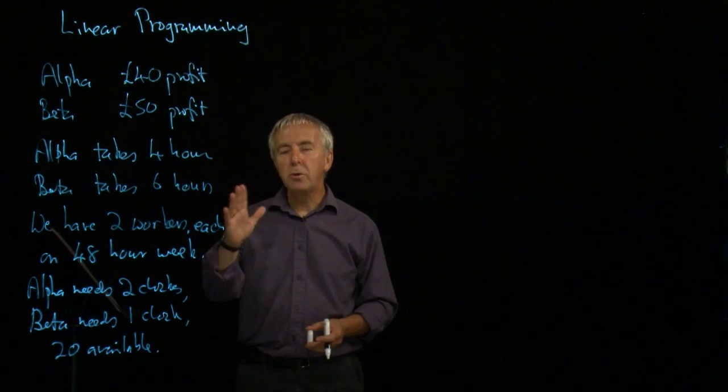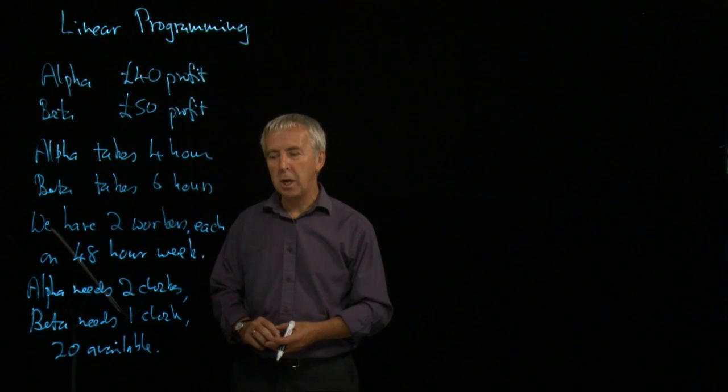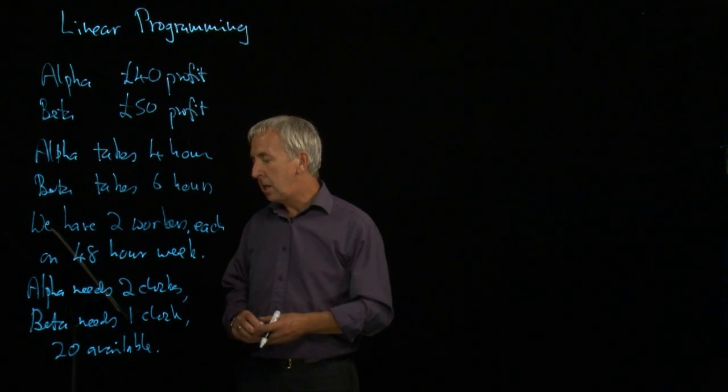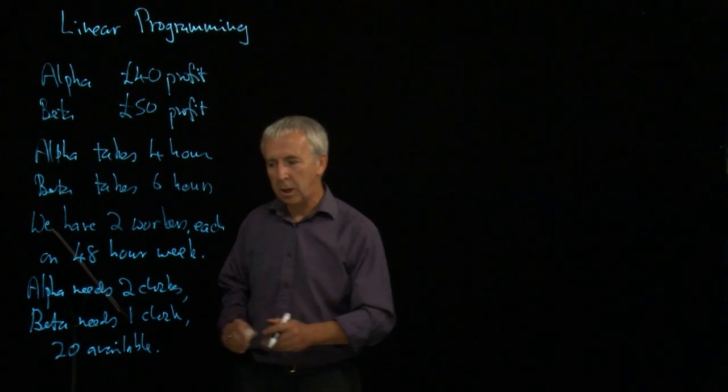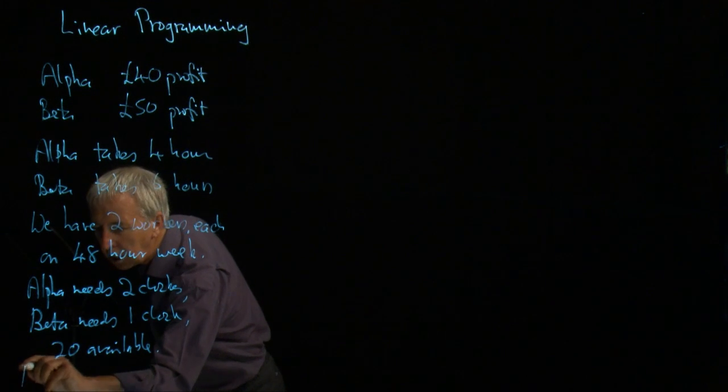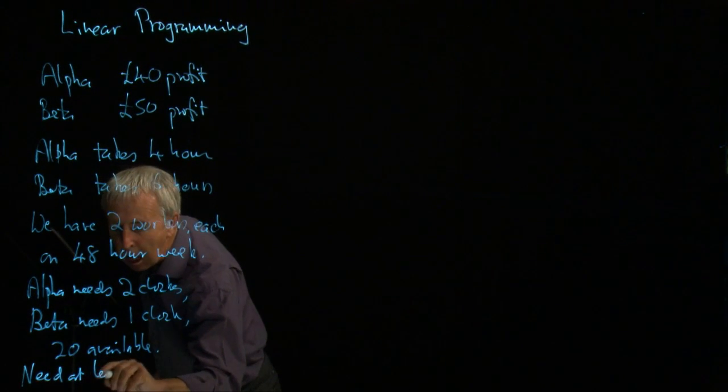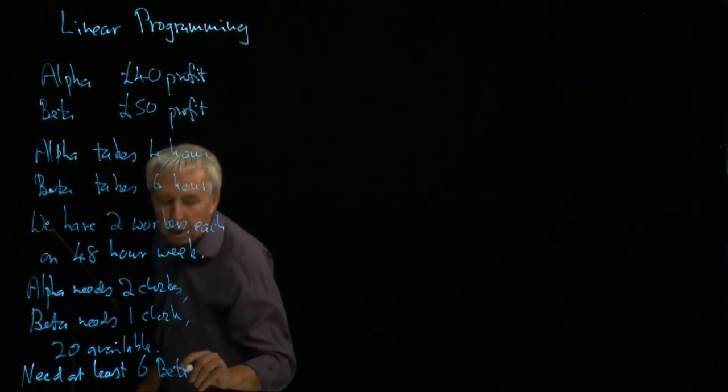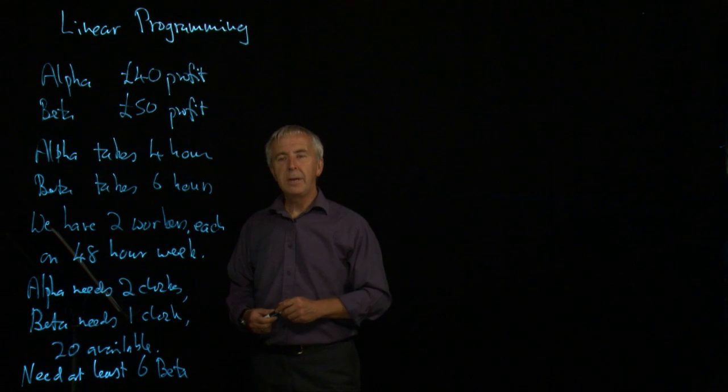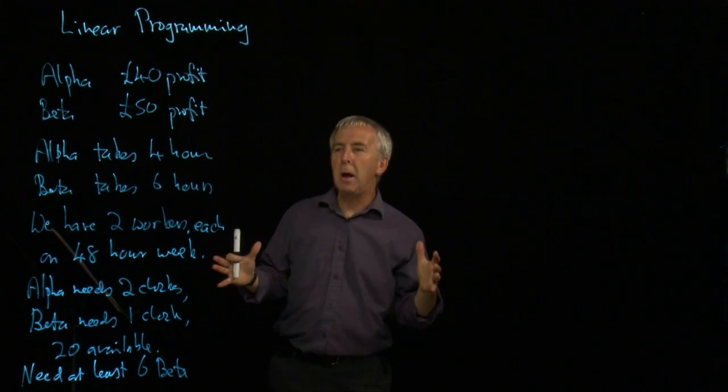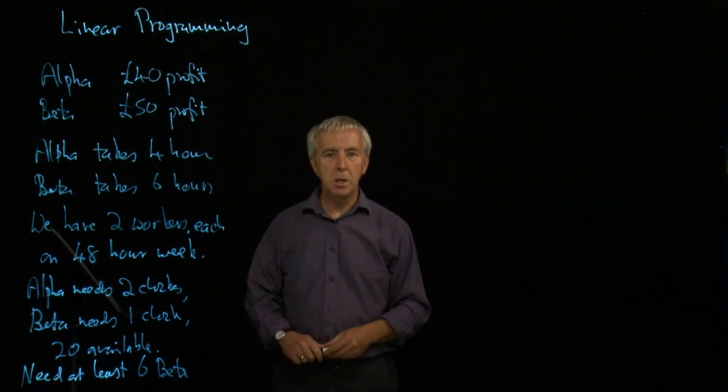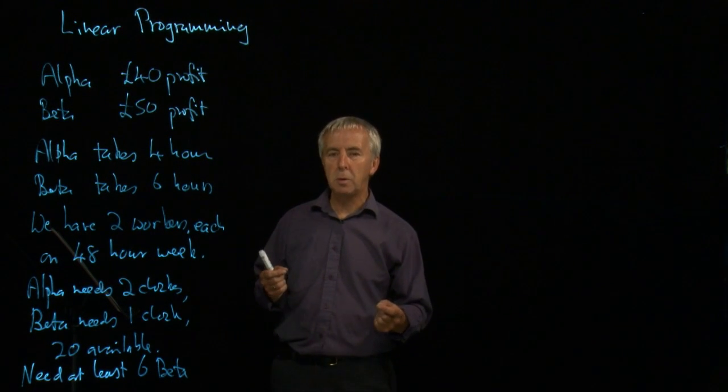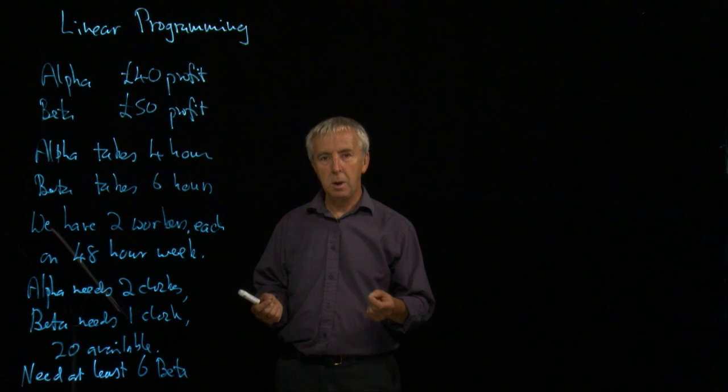And lastly, the final constraint as they're called, these limitations, is that the company decides it wants to make at least six of the betas each week. So we need at least six betas each week. So that's the background. That's the specifications for our project. And we've got to try and decide how many alphas and betas we can make that will maximize the profit.